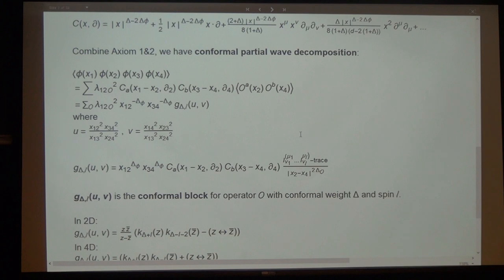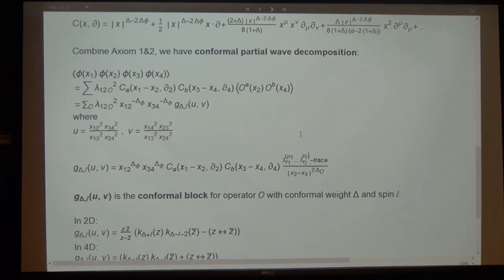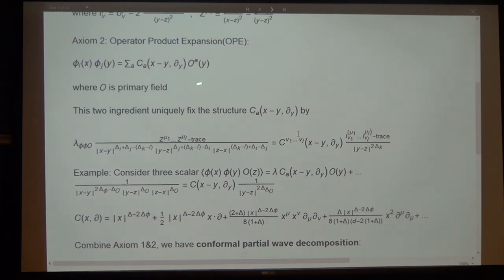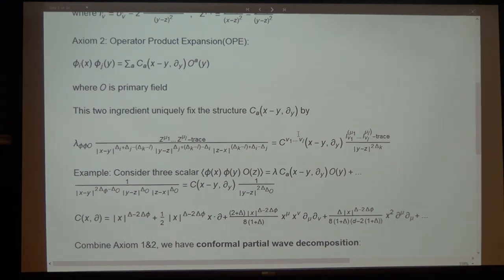At this point: what is the CFT data? The CFT data is actually two sets of data. One set is the conformal dimensions. Another set is the OPE coefficients. If you're given these two sets of data, you can use the OPE to contract any correlator and evaluate any n-point function. Solving the QFT means evaluating n-point functions. So once you know these two sets of data — the dimensions and OPE coefficients — the CFT is considered solved.